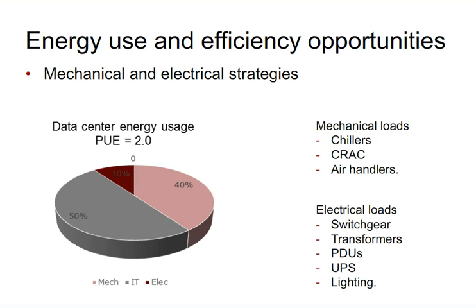Looking at a data center with a PUE of 2.0, you can see the energy breakdown between IT equipment, electrical, and mechanical. This is an older-style system where mechanical could include chillers, CRAC units, and air handlers, and electrical loads include switchgear, transformers, PDUs, UPSs, and lighting. Some of that energy, such as transformer losses, is essentially waste energy.